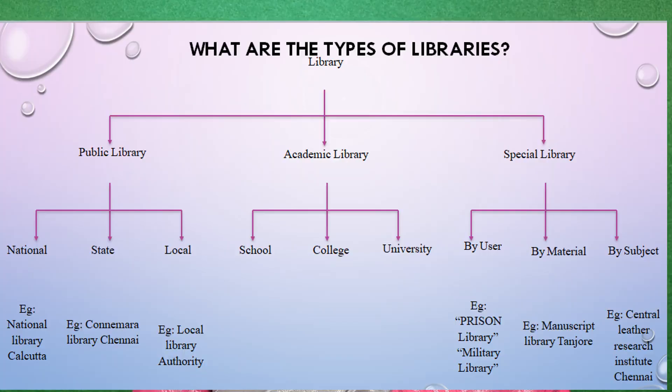In any part of the world, the library system operates as a three-tier system consisting of: public library system, academic library system, and special library system. Each one of them has its own specific objectives, structure, organization and function.